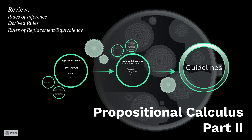We might begin in a purely descriptive way: this is a unique thing that functions in a unique way — we will call it x. This is very similar and functions similarly, so it is also an x. Once we become confident of what x is, contrasting it with what x is not, we might say this x functions in this way, and that x functions in this way, and conclude that all x function in this way. But we cannot really know that for certain. There is no certainty with inductive reasoning, only some degree of probability.